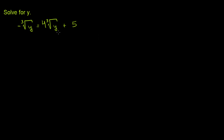We're asked to solve for y. We're told that the negative of the cube root of y is equal to 4 times the cube root of y plus 5. In all of these, it's helpful to isolate the cube root — isolate the radical in the equation — and then solve from there. So let's see if we can isolate the radical.